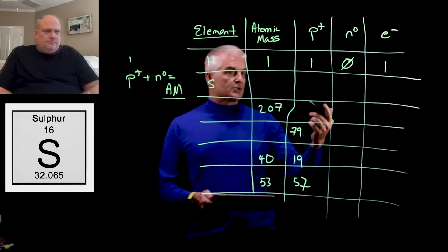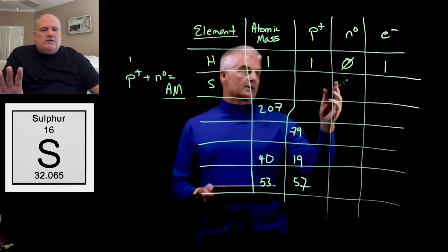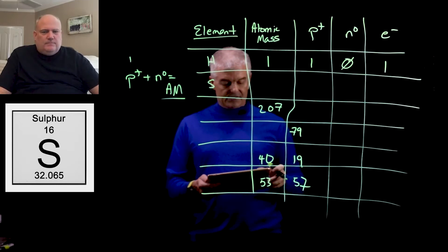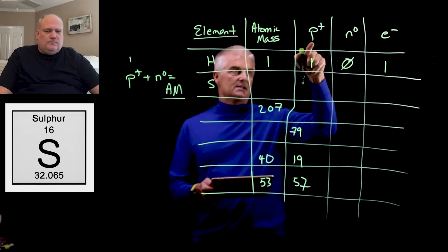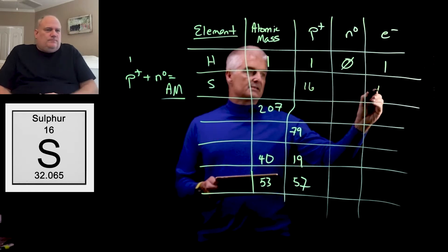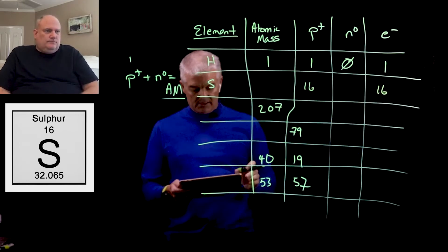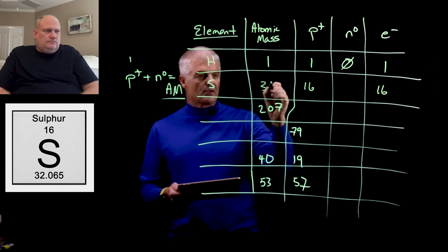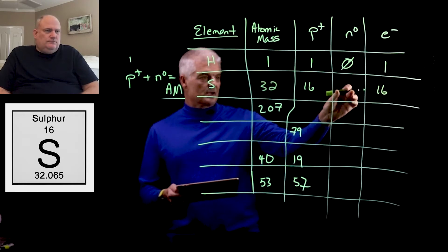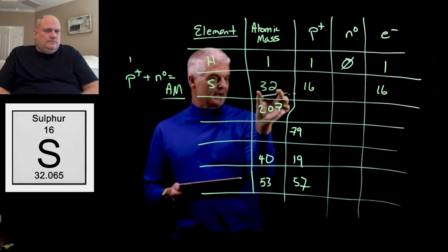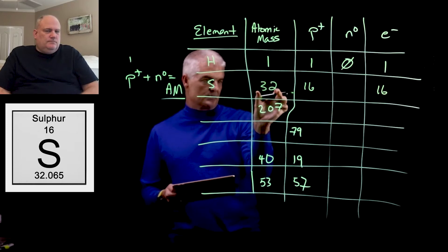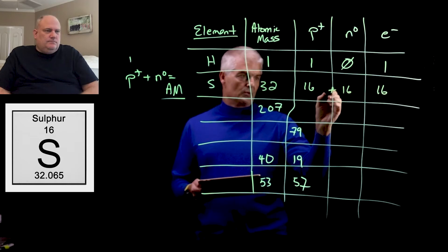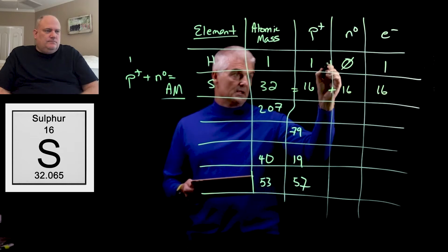Looking at sulfur on the periodic table, sulfur has an atomic number of 16 — so both protons and electrons are 16. The atomic mass rounds to 32. To find the neutrons: 32 minus 16 equals 16. So protons plus neutrons must add up to the atomic mass — in this case, 16 + 16 = 32.